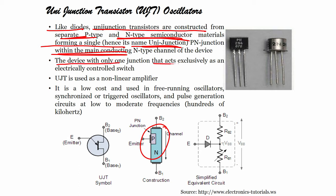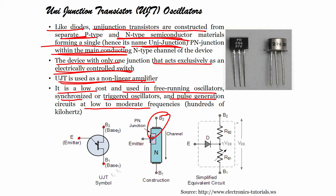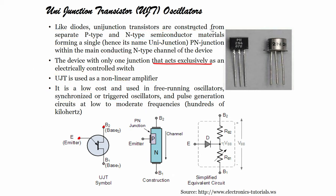The UJT device has only one junction and acts exclusively as an electrically controlled switch. UJT is a non-linear device — it is low cost and used in free running oscillators, synchronized or trigger oscillators, and pulse generation circuits at low to moderate frequencies. It looks like a p-n diode with a resistance due to B2 and a resistance due to B1, giving terminals of base 1, base 2, and emitter — the emitter being the p-type region within the n-type channel.